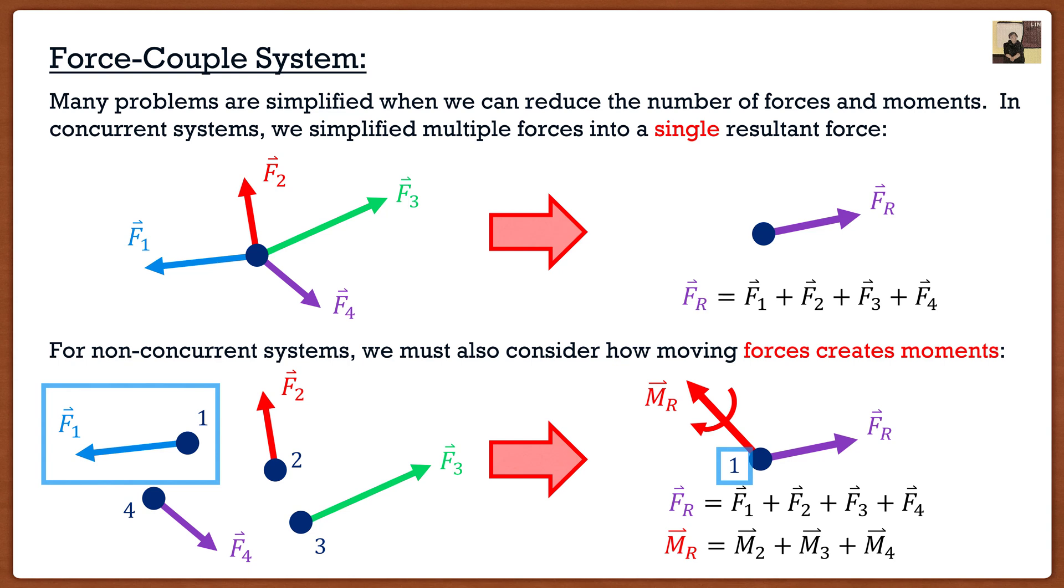If I wanted moment two, moment three, moment four, I actually am going to have to create position vectors from point one to each one of those forces, and then cross them together. So in this particular scenario, if it's three dimension, I have to do the cross product three times.